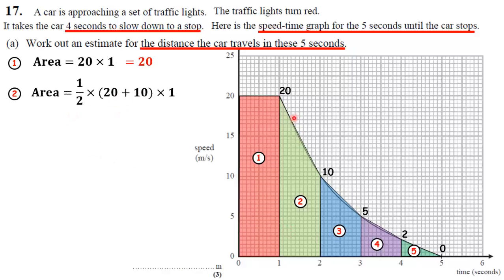So a half times 20 plus 10 times how wide it is. It's 1 wide. And you do that working out. You can plug that into your calculator. You can work it out just by looking at it, because it is pretty straightforward. That's 15.